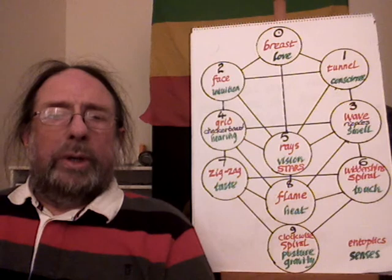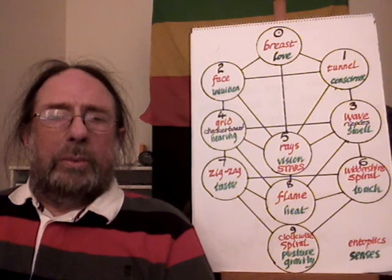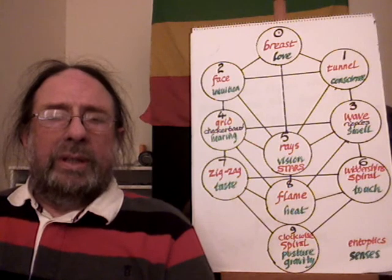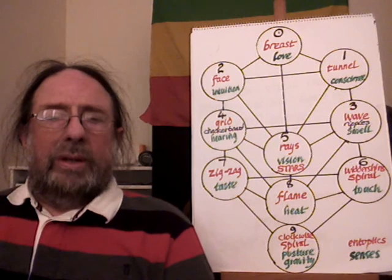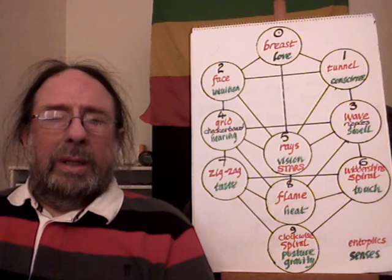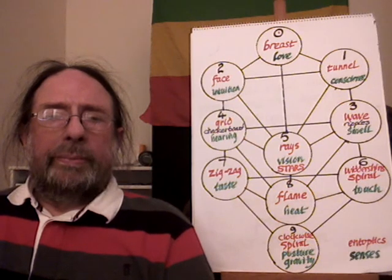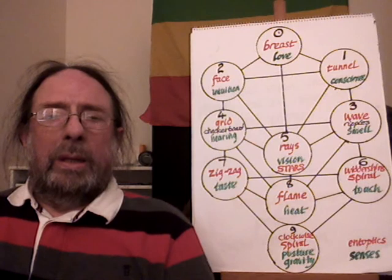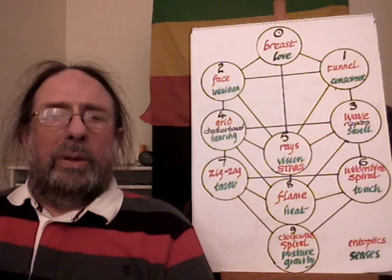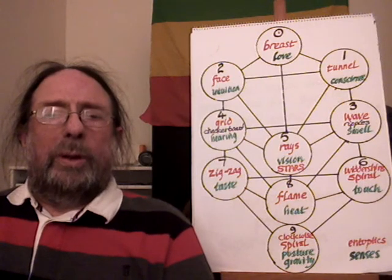All three are continuous: you have a continuous flow of attention in the top triangle, a continuous flow of space-time in the second middle triangle, and a continuous flow of things — pressure variations and realities if you like — that we live with. Reality literally means the world of things.